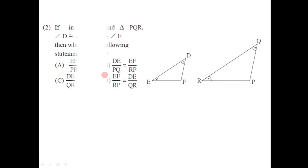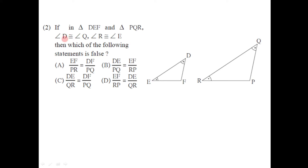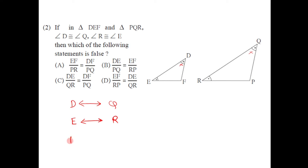The next question: a diagram is given with two triangles. Angle D is congruent to angle Q, as shown by similar signs in the diagram. Similarly, angle R is congruent to angle E. We have to decide which of the following statements is false — meaning three alternatives are correct and only one is wrong. Since angle D corresponds to Q and angle R corresponds to E, the last vertex F must correspond to P.